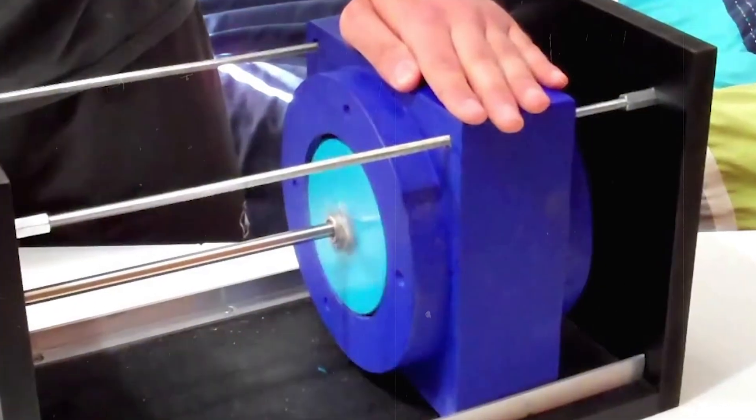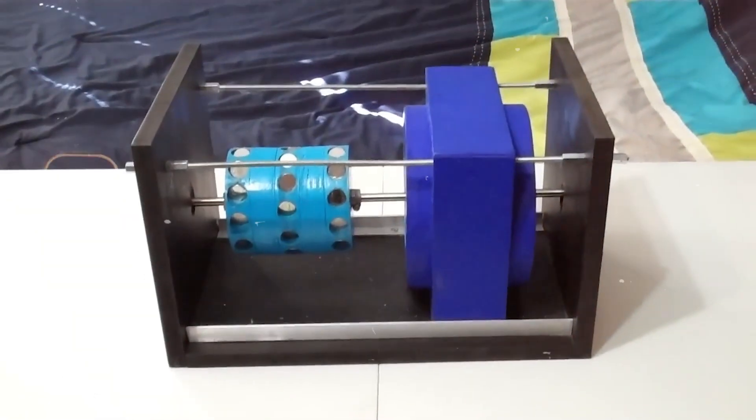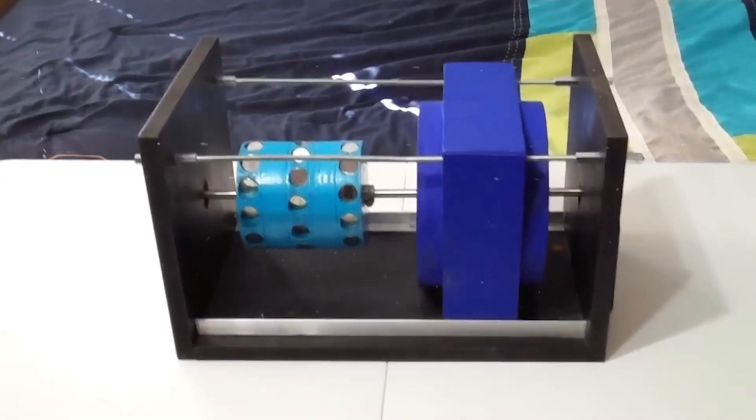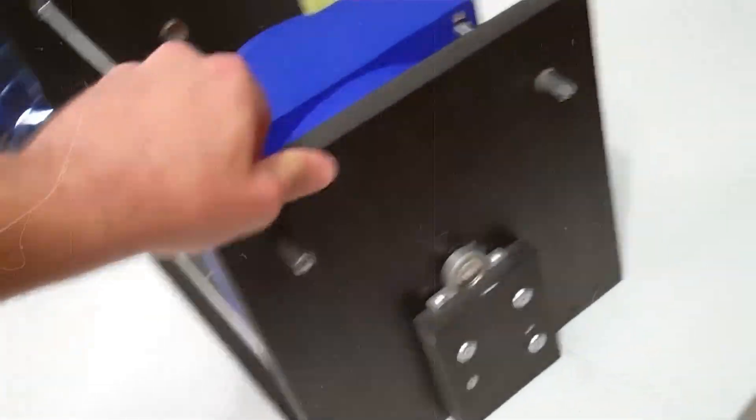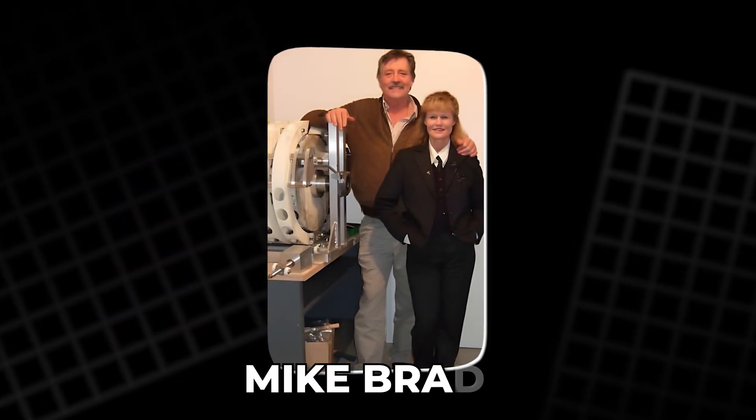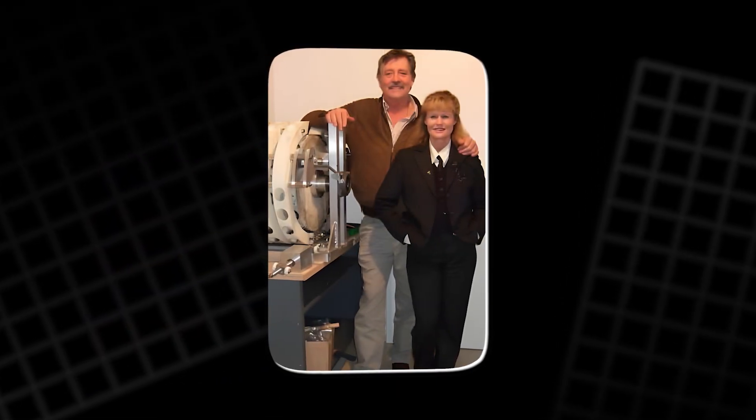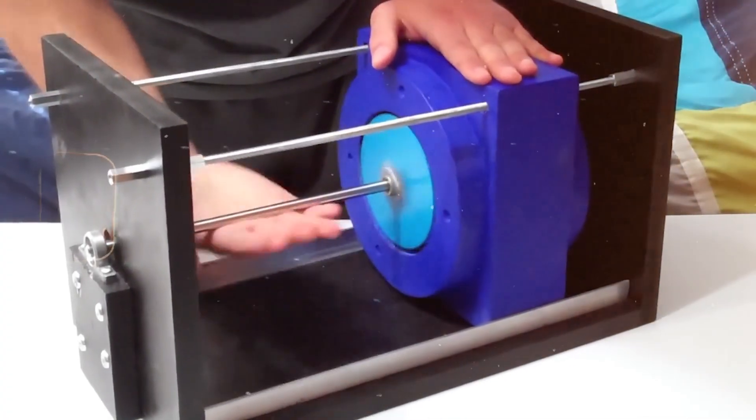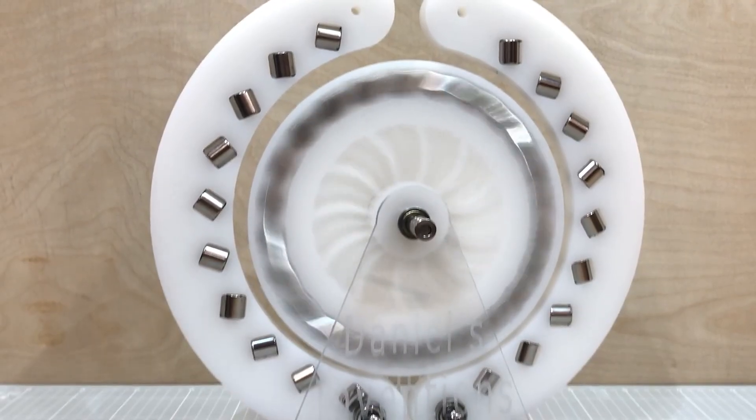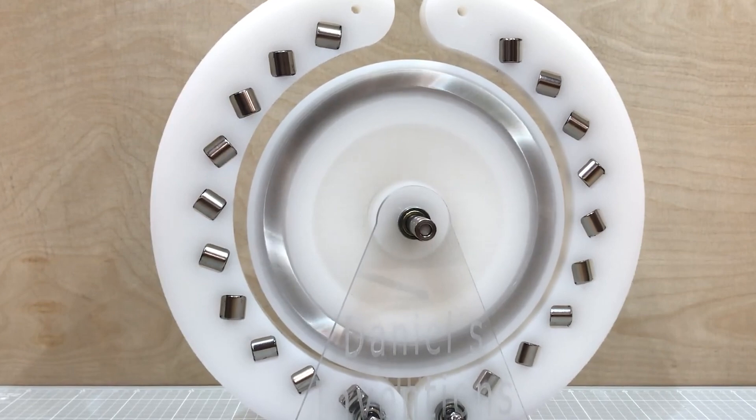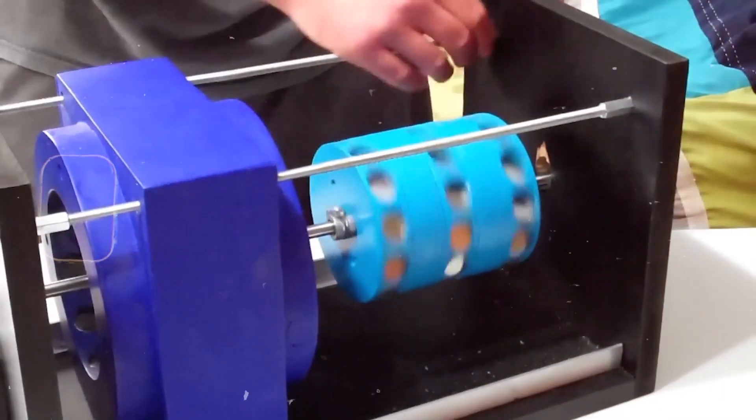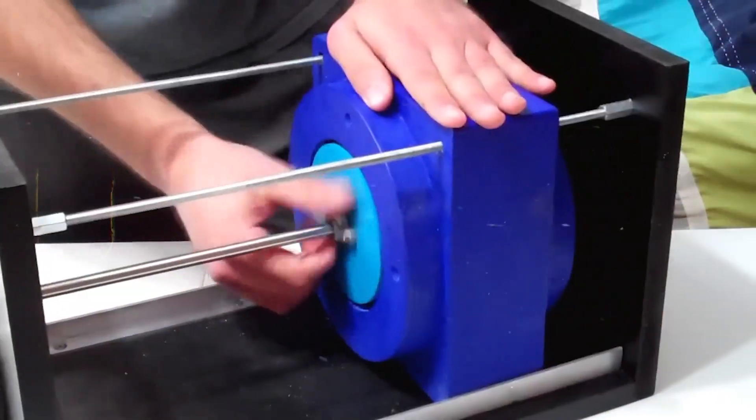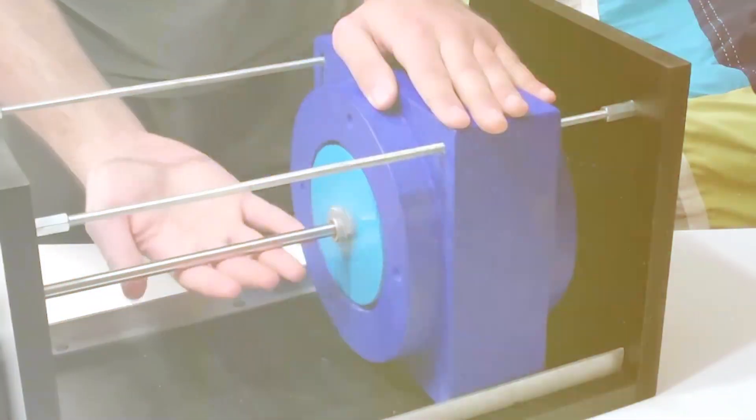Another example is the Perendi motor, which was supposedly capable of generating 20 kilowatts of power without using any fuel or external energy source. Invented by Mike Brady, this motor claimed to use magnetic forces to drive a generator and produce free electricity. However, Brady never demonstrated the motor in public, and the few videos he showed were found to be faked or manipulated. Brady was eventually arrested for fraud, and his motor was exposed as a scam.